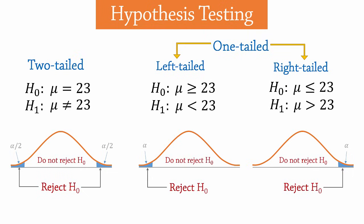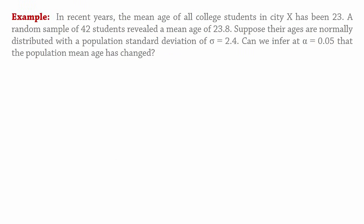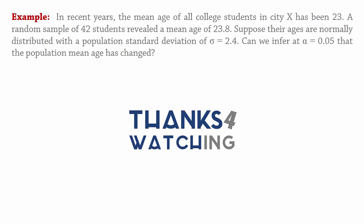If the test statistic falls in the rejection region, we reject the null hypothesis. Otherwise, we fail to reject it. In the second part of this video, we will look at an example to illustrate the hypothesis testing process. Thanks for watching.